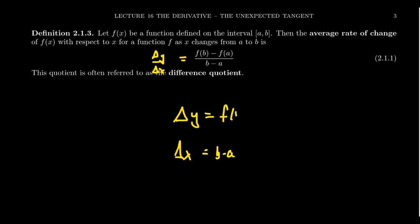Delta y is f(b) minus f(a). After all, f(a) is just the y-coordinate corresponding to x equals a on the graph of y equals f(x). Likewise, f(b) is just the y-coordinate of the point associated with b on the graph of y equals f(x). So the difference quotient is simply the difference of the y-coordinates divided by the difference of the x-coordinates.